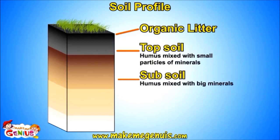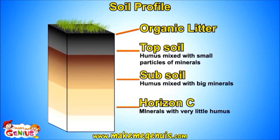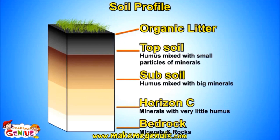The third layer is subsoil. It consists of some humus and some minerals. The second to last layer is Horizon C. It is purely minerals. Finally, the last layer is bedrock. It is completely made up of rocks.